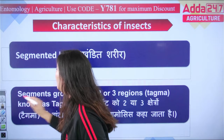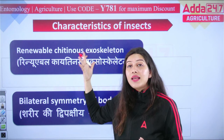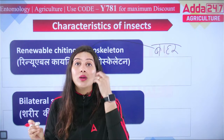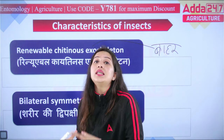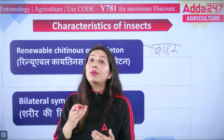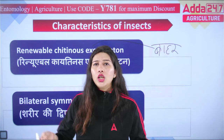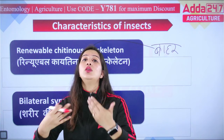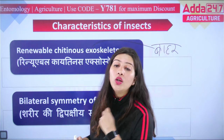Next characteristic: insects have a renewable chitinous exoskeleton. 'Exo' means outer — so the outermost covering of an insect's body is called the exoskeleton, which is made of chitin. 'Renewable' means they can shed and replace it. Just like a snake sheds its old skin, insects periodically shed their entire old skin — their cuticle — and grow new skin. This shedding process is called molting.